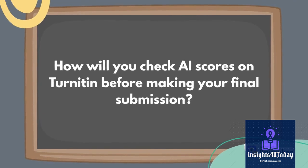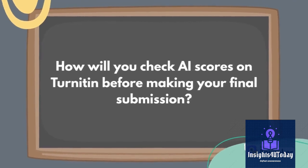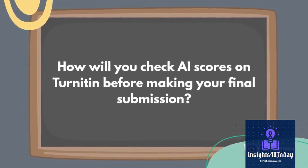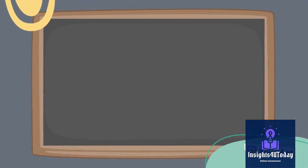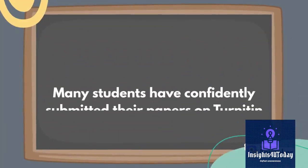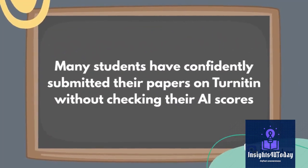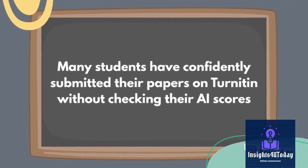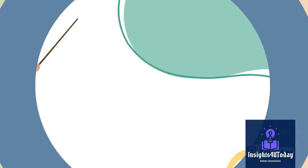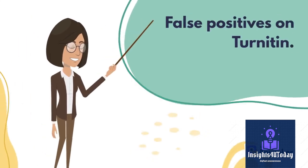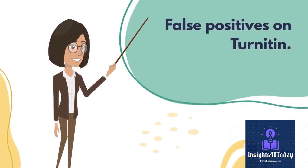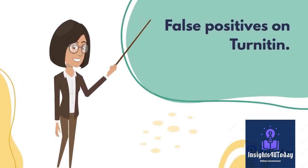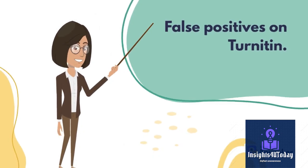The question is how you will check AI scores on Turnitin before making your final submission. Many students have confidently submitted their papers without checking their AI scores and they face penalties for lack of academic integrity. They do not know that Turnitin now detects even Quillbot paraphrasing. Moreover, even if you do not use AI, you should still check your papers because of false positives on Turnitin.